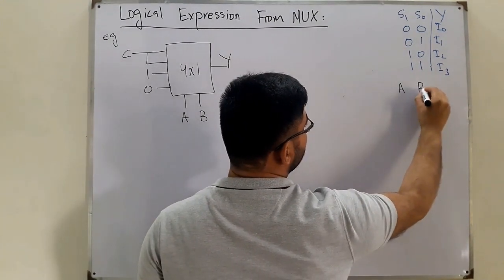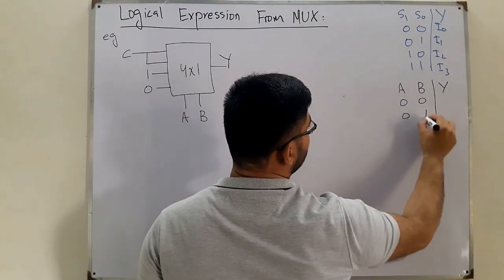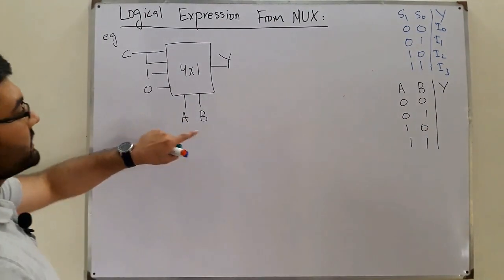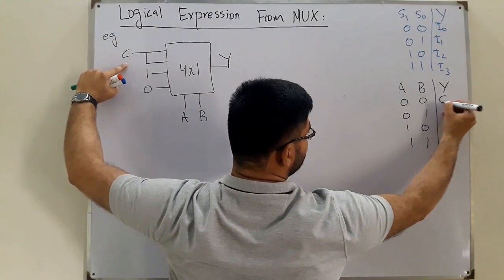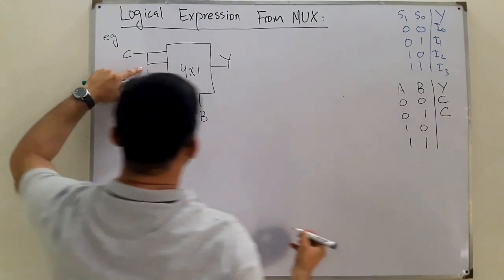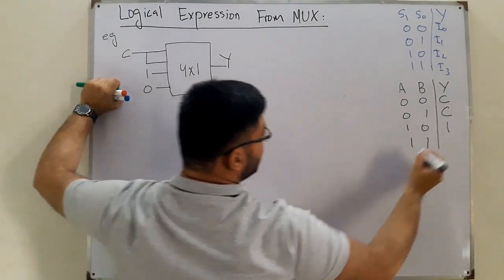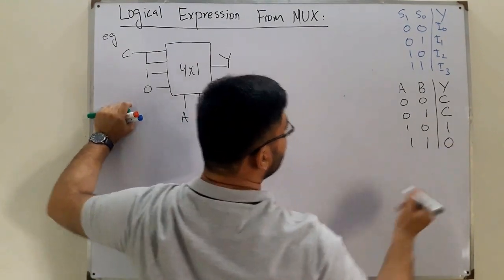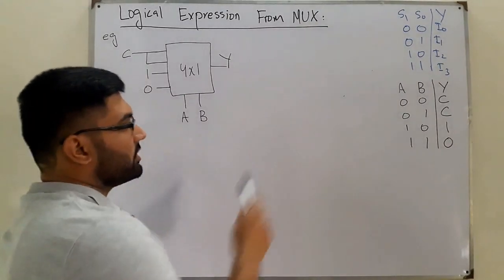We have A, B, and output Y. The four input combinations are: 00, 01, 10, 11. If the select line is 00, the very first input is selected — that's C. If it's 01, the second is selected — that's also C. For the 10 combination, the third input is selected, which is 1. And for 11, the fourth is selected, which is 0.